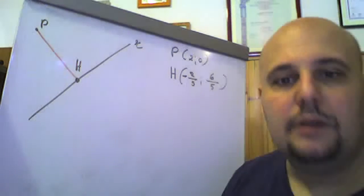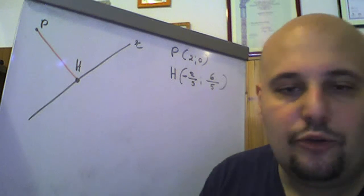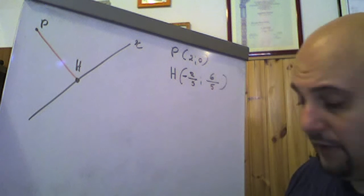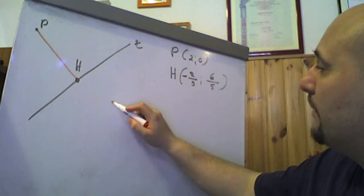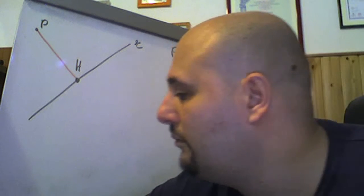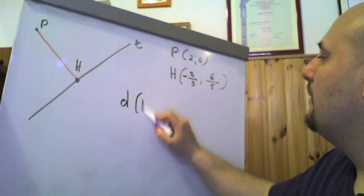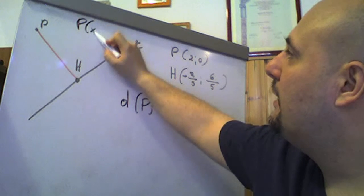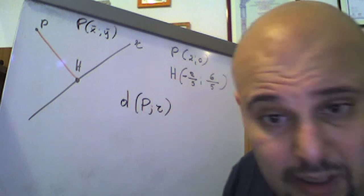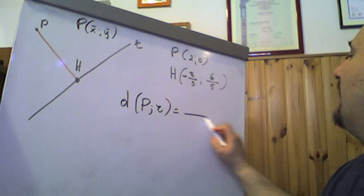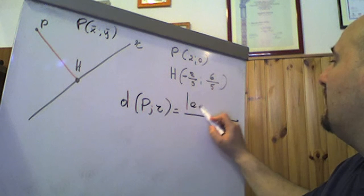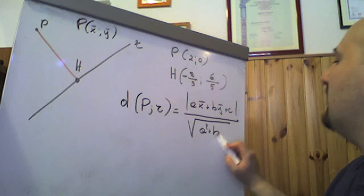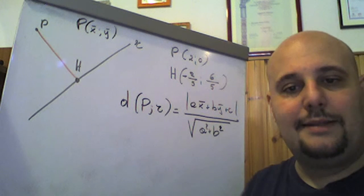La formula della distanza fra due punti — se non ci chiedono di calcolare la distanza di un punto da una retta, c'è la formula nota come distanza di un punto da una retta. La scrivo in rosso. Se P ha coordinate generiche x̄ e ȳ, la distanza di un punto da una retta è: nel numeratore il valore assoluto di Ax̄ + Bȳ + C, diviso la radice quadrata di A² + B². Questa è la formula della distanza di un punto da una retta.